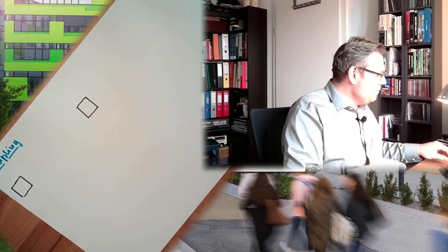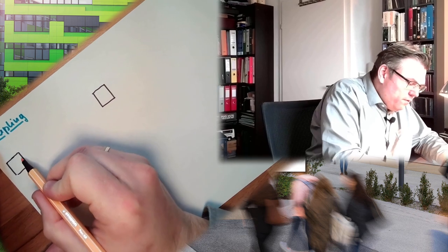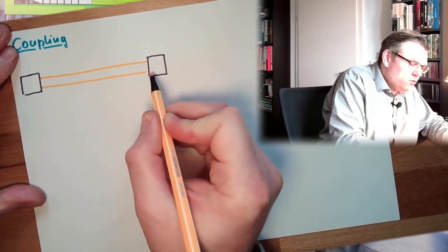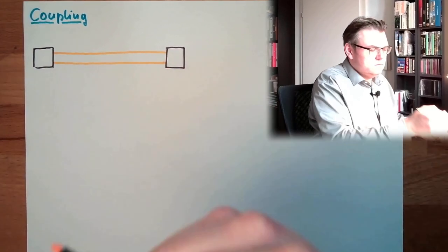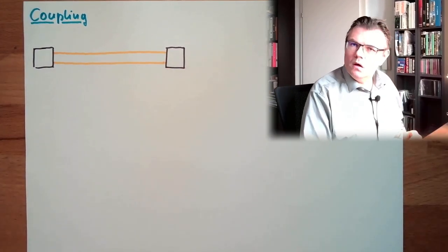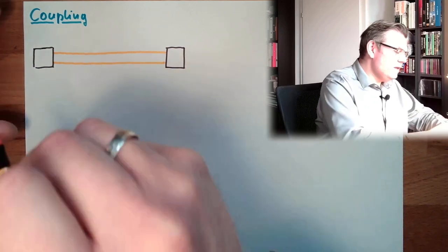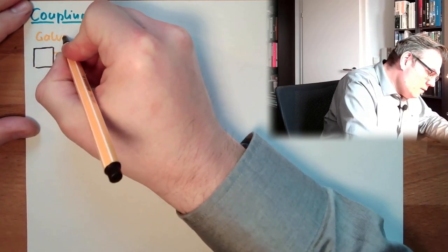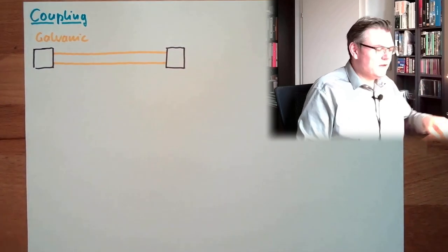How does this look like? Well, here is one communication partner, here is the other communication partner. I am using one wire. Usually, we need a second wire to close the loop. This thing is called galvanic coupling.